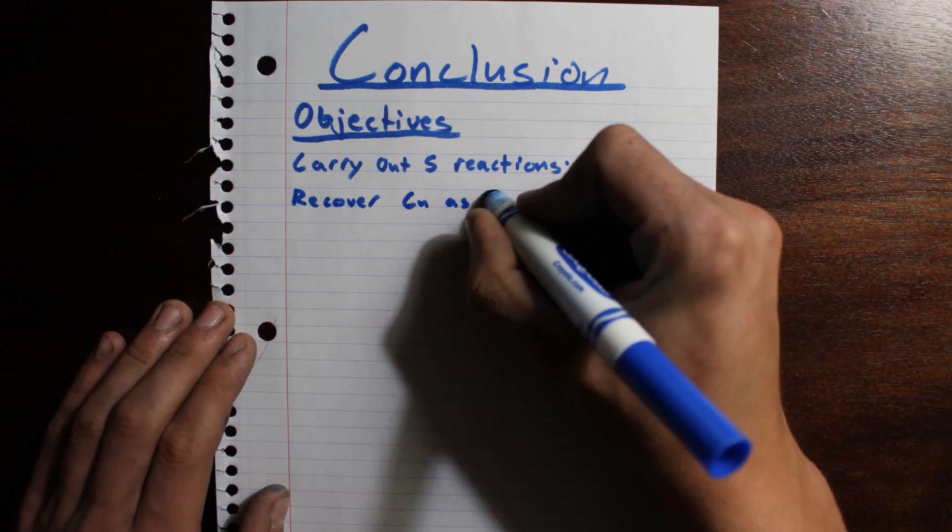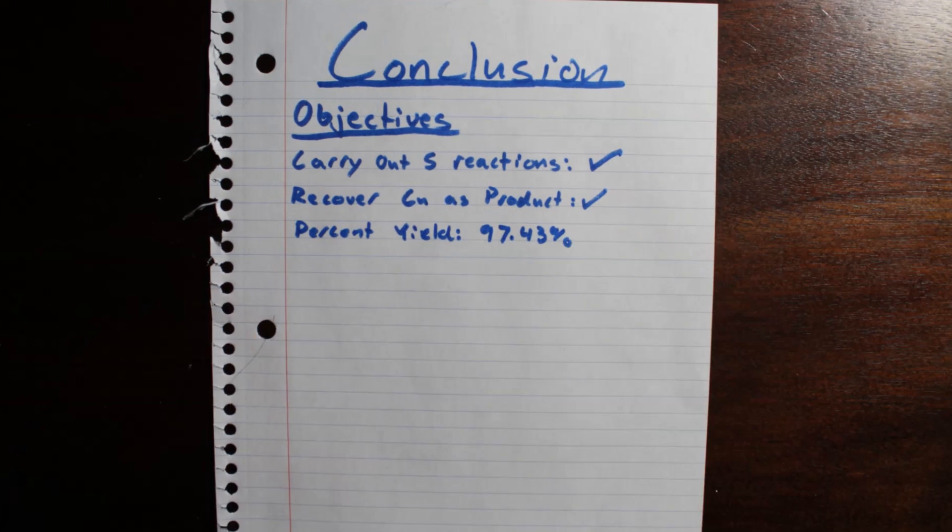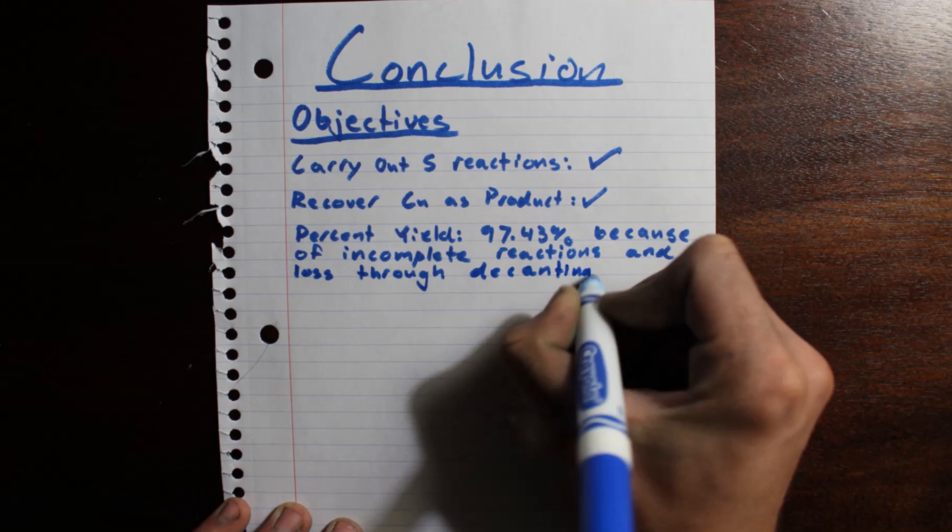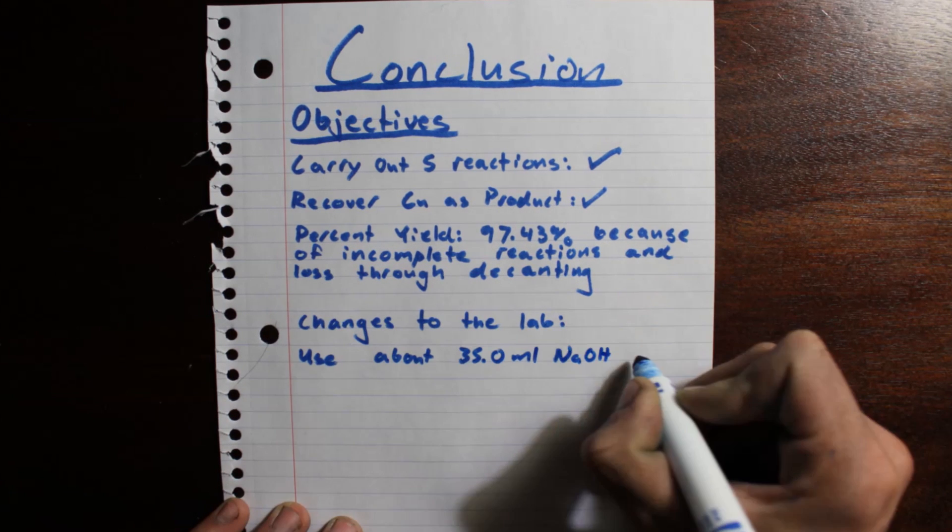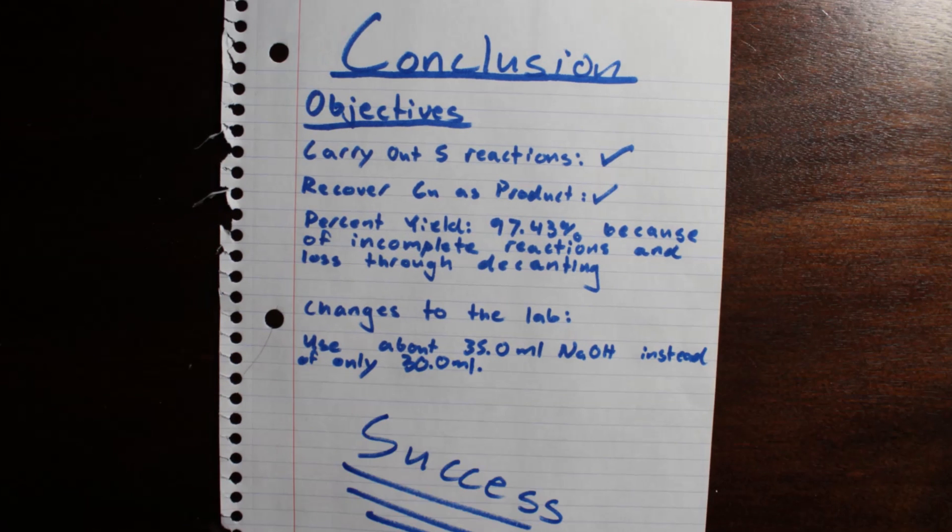We successfully completed the objectives of the lab by recovering 97.3% yield of copper. The lab could be made better by using 35 milliliters of sodium hydroxide instead of the original 30. Overall it was a success.